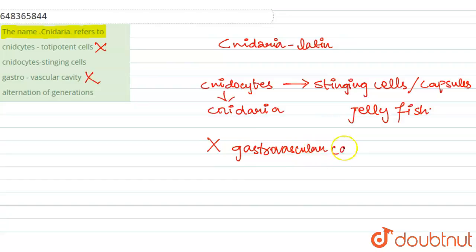Gastrovascular cavity not present in Cnidaria. Now the last option. Last option is alternation of generations. Cnidaria does show the alternation of generation. It is during the sexual phase of them, it shows two generations.